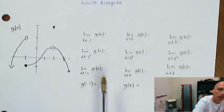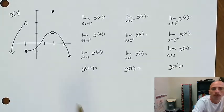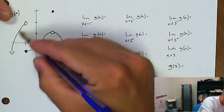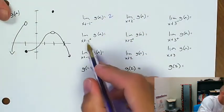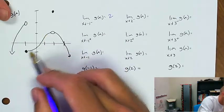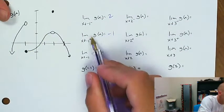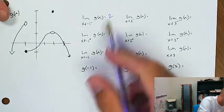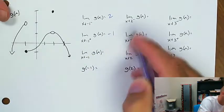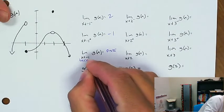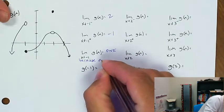Let's move on to this graph of g of x. As we approach negative 1 from the negative side, y is approaching 2. As we approach negative 1 from the positive side, y is approaching negative 1. Because g of x represents the y coordinate, and since these two disagree, the limit fails to exist because of one-sided limits disagreeing.